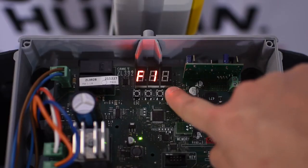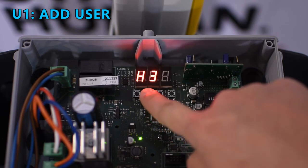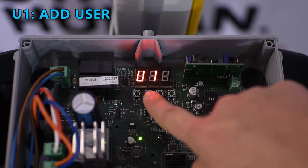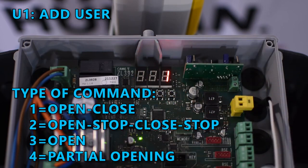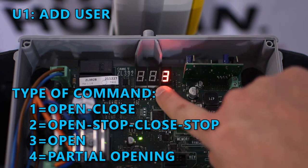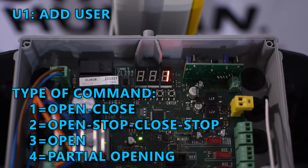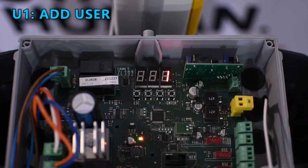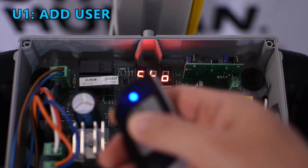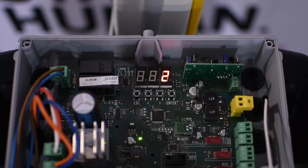To program a remote control go to U1. Press enter and it will show the number 1 indicating the command you want to assign to the button of the remote control. Select which type of command you want and press enter. Then a number is going to blink indicating that it is ready to receive the signal from the remote control. So press the button you wish to program. That signal is going to be stored in the user number that was blinking before.